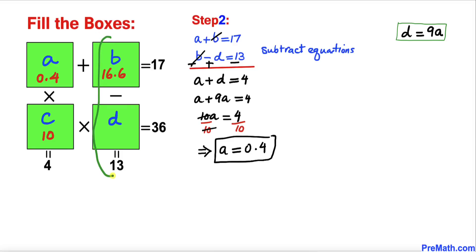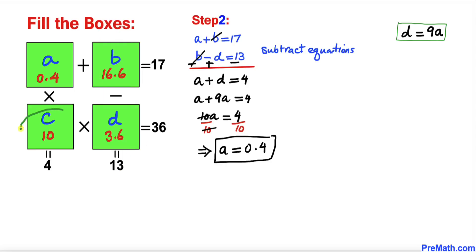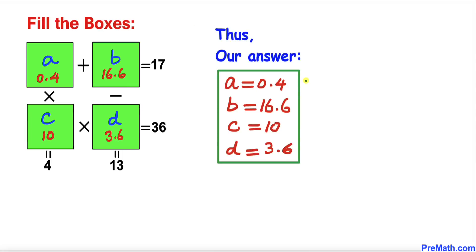Finally, focusing on the right-hand boxes: B minus D equals 13. We know B is 16.6, so D has got to be 3.6, because subtracting these two numbers gives us 13. And we can verify that C times D, which is 10 times 3.6, does indeed give us 36.